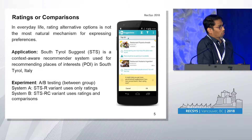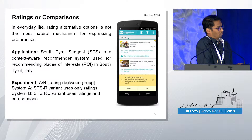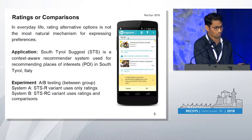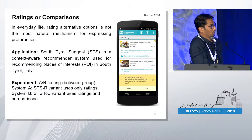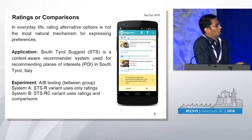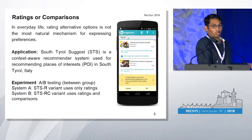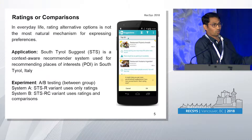In order to test our hypothesis, we used a mobile app called Citroel Suggest, which is a context-aware recommender system that suggests points of interest in the Citroel area. It's already available on the Google Play Store.